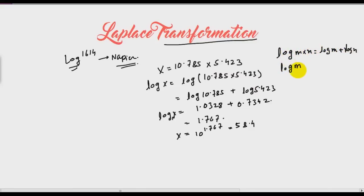So log m into n is log m plus log n. Then log m by n is log m minus log n. Then log m raised to power n is n log m. And by inverse, all the calculation becomes easy. So this is known as transformation.